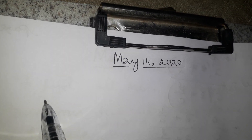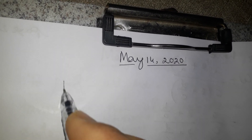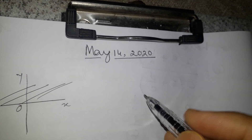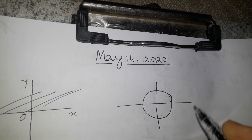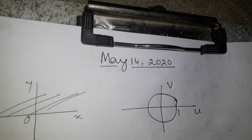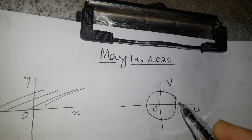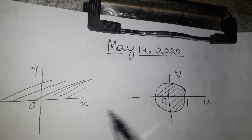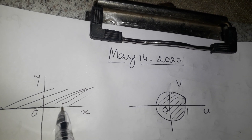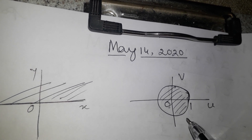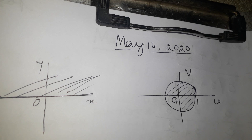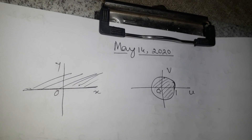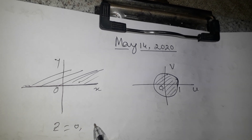We are trying to find the general Möbius transformation that maps the upper half plane onto the unit circle in the w plane. This is the z plane, this is the w plane. The upper half plane is mapped onto the interior points of the unit circle, and the real axis is mapped to the unit circle. We want to find all such Möbius transformations by considering z equal to zero and infinity.